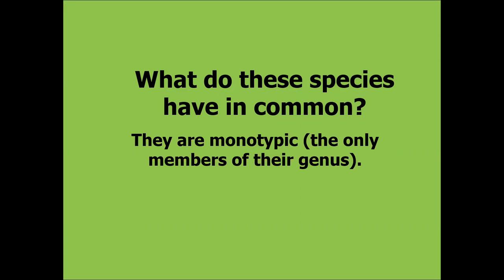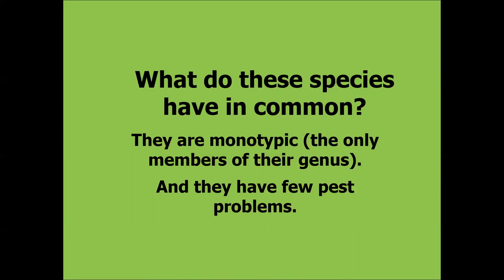So what do those species — Katsura tree, hardy rubber tree, ginkgo, and Osage orange — have in common? Something very unique: they're monotypic. They're the only members of their genus. When they get together for the holidays, they're all alone — there really aren't any very close relatives. And they have very few pest problems. Think about it: what pest problems do you see in your area on any of these trees? When I worked in plant healthcare programs in New England, we didn't have to worry about scouting pests on those trees.